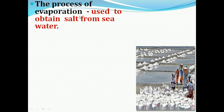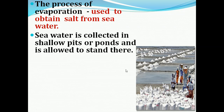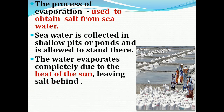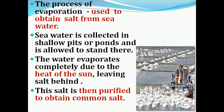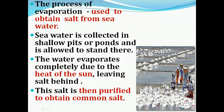Evaporation technique is used to obtain salt from seawater. Seawater is a mixture of salt. In this picture you can see the pond where they stagnate water and by the process of evaporation they are separating the salt. Seawater is collected in shallow pits or ponds and is allowed to stand there. Then the water evaporates due to the heat of the sun, leaving the salt behind. After that the salt is collected and purified to obtain common salt.